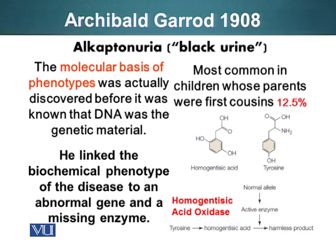We will start with the experiments of Archibald Garrod. Archibald Garrod, in 1908, was studying a disease called alkaptonuria, or black urine disease.